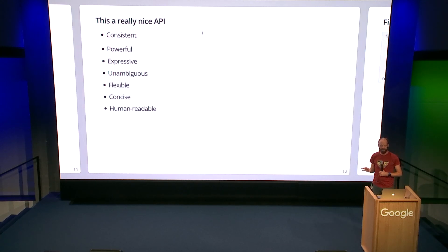I want to say that this is actually, they've got a really nice API here. Everything they've done is very consistent. It's very powerful and expressive. It's unambiguous. It's easy to type in at curl, and it's very human readable. But we're going to write a Go client library for this.